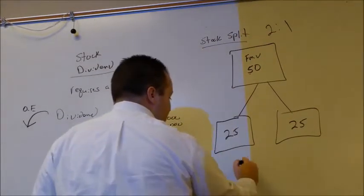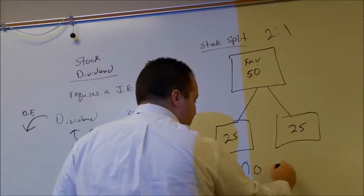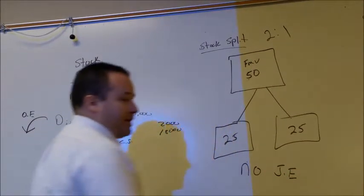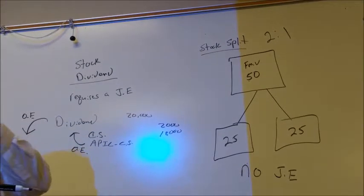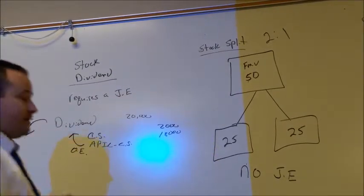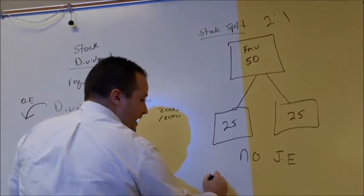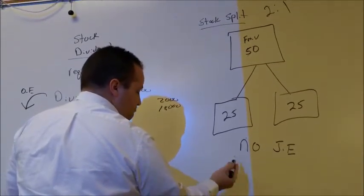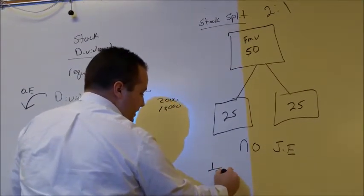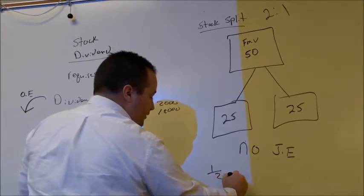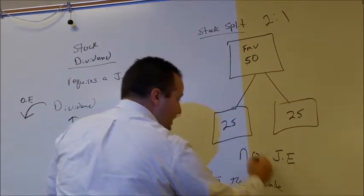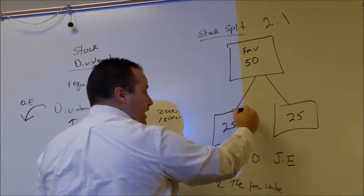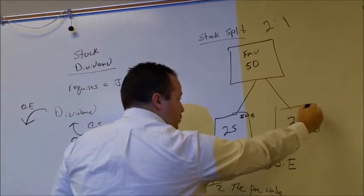Nothing happened really. So when there's a stock split, there is no journal entry to record. The only thing a stock split does is one, it cuts in half the par value. So if the par value was $1, now the par value, you still have $1, but now each of them are worth $0.50.